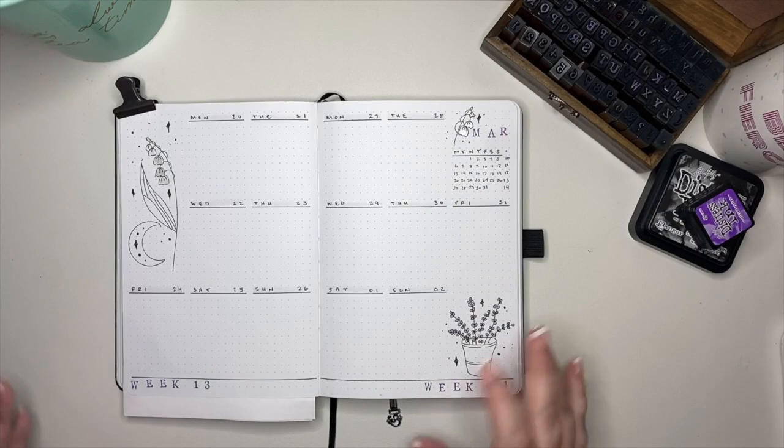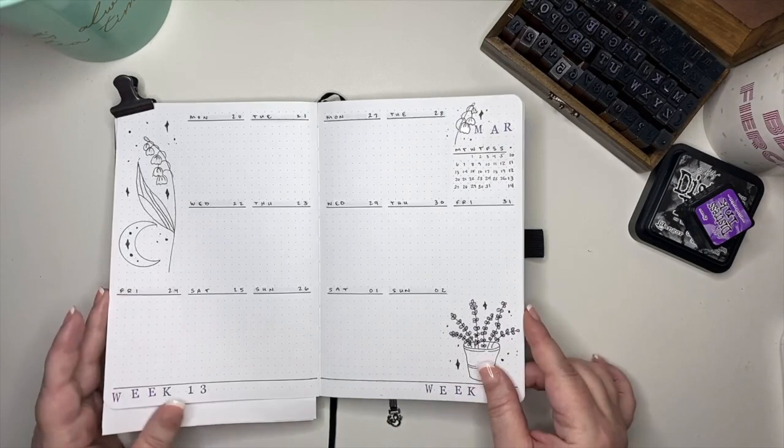Resuming our regularly scheduled programming, this is the completed spread for weeks 13 and 14, and we are ready to move on to the final spread in this setup for Kenny for March.